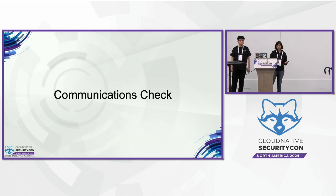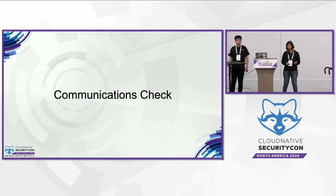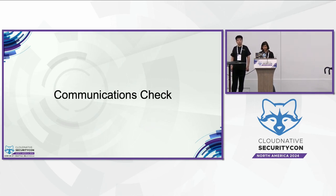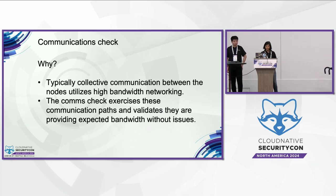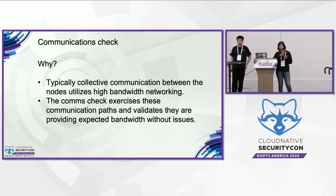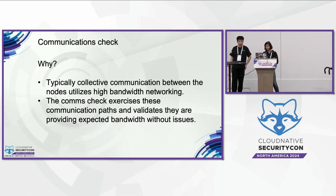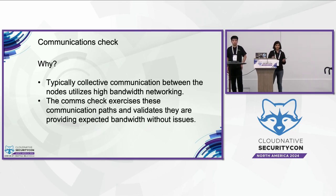That's it for node problem detector. What we essentially saw is that we need a problem detector that's always on, and the upstream node problem detector is an excellent candidate for this task. Next is communications check. Unlike NPD, which is always on, this is a check we prescribe before starting the training job. Simplistically, in a training job, some computation happens locally and then all the workers sync up on results. That sync-up operation, typically referred to as a collective communications operation, utilizes high-bandwidth networking — typically RDMA-based, EFA in the case of AWS. So it's important to exercise those pathways and validate your networking configuration before starting your workflow.